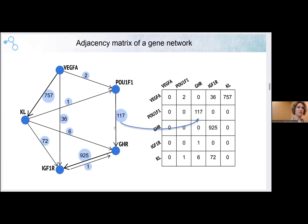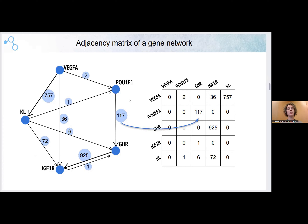Our study is very close to this. We are working with adjacency matrices of different gene networks that correspond to different ages. For example, if we have a gene network, we have connections between genes, and such connections have a measure of force that one gene influences another. These connections can be presented as a table with coordinates corresponding to different genes and numbers corresponding to the force of influence of one gene on another.